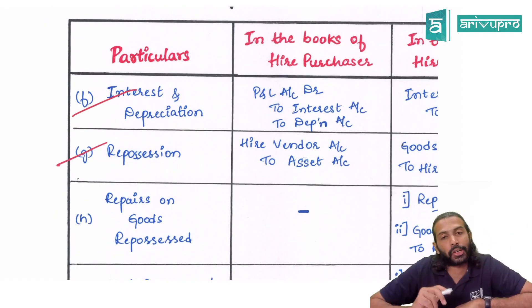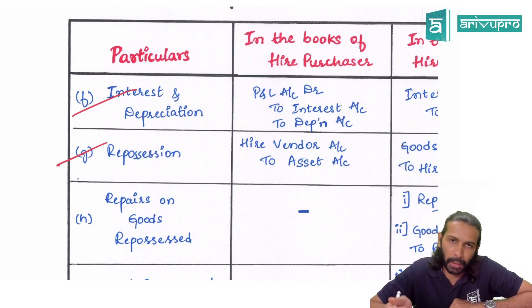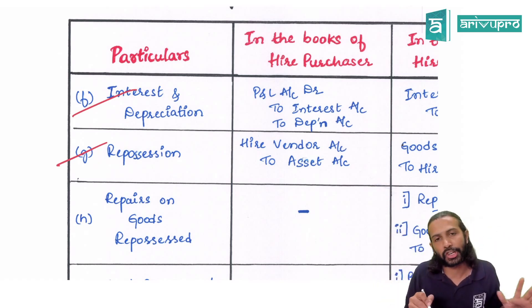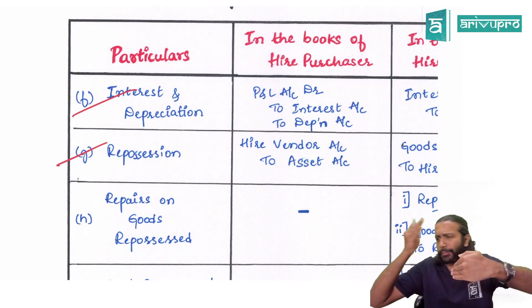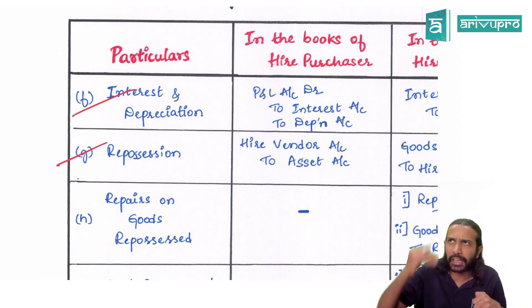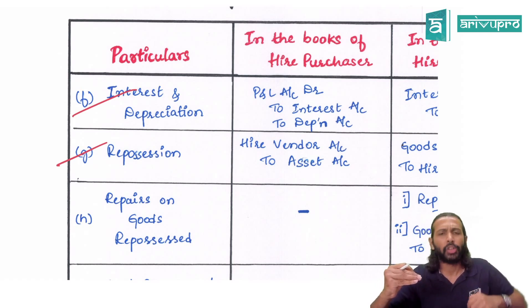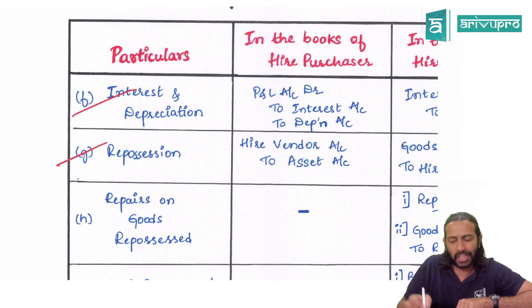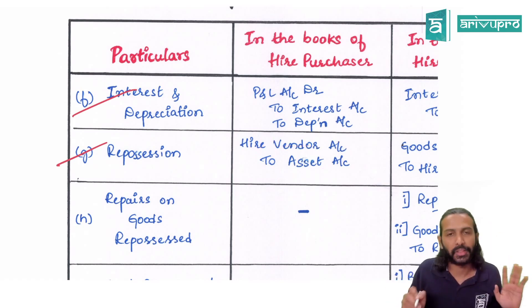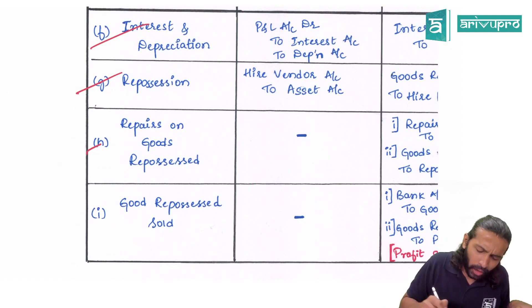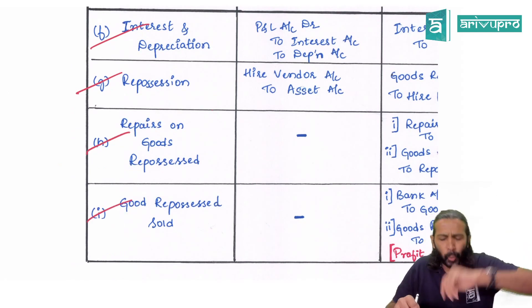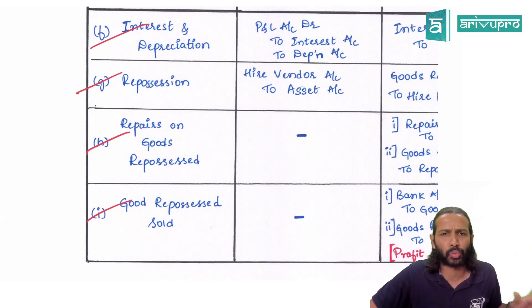Next is repossession. If the hire purchaser defaults any payment, the hire vendor will take back that asset — that we call repossession. When the hire purchaser originally purchased the fixed asset, the entry was Fixed Asset Account debit to Higher Vendor. When repossession happens, the reverse entry is passed: Higher Vendor Account debit to Asset or Fixed Asset Account. After repossession, any repairs and resale will be handled by the hire vendor, so no entry for those comes in the hire purchaser's books.